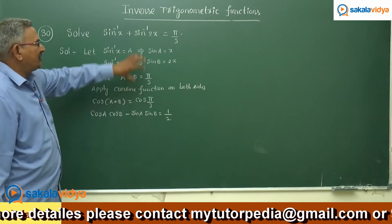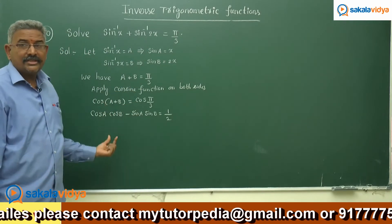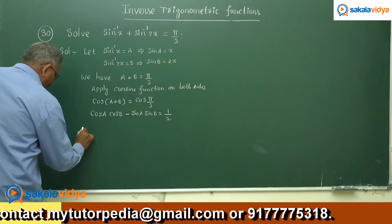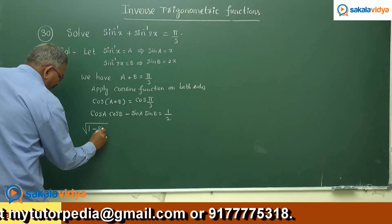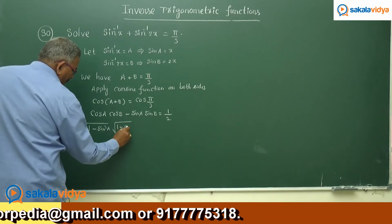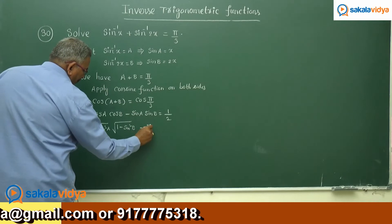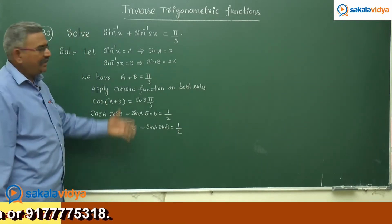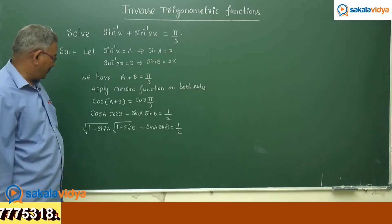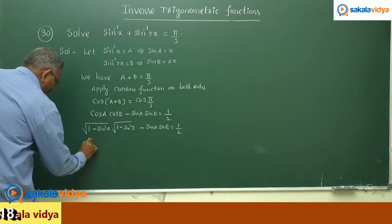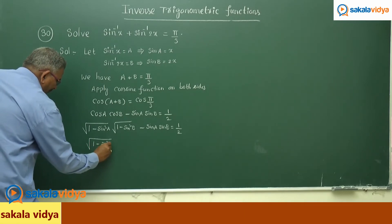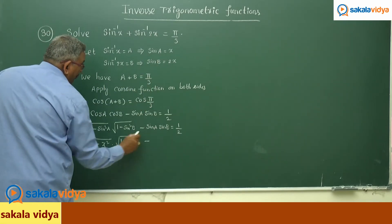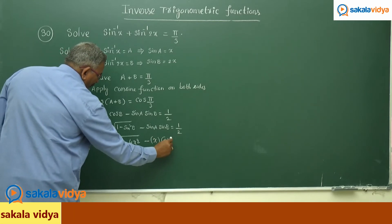We can directly substitute sine a and sine b, but we need cos a and cos b expressed in terms of sine. So cos a equals √(1 − sin²a) and cos b equals √(1 − sin²b). Therefore: √(1 − x²) · √(1 − 4x²) minus x · 2x equals 1/2, since (2x)² equals 4x².